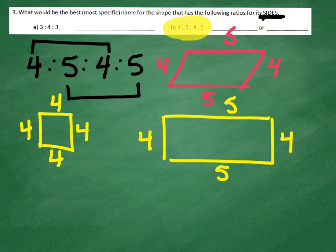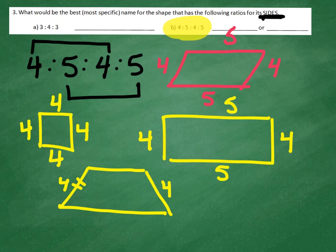Could it be a trapezoid? That's interesting. It could definitely have a 4 here and a 4 here because if it's an isosceles trapezoid, that would work out nicely. But the 5 and the 5 would not work out.